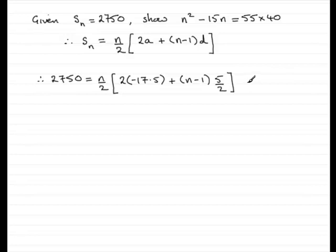Right, so we've got that. There are many things we could do to simplify this. Let's just work on the inside of the bracket, and also at the same time I'm going to multiply both sides by 2. So if I times both sides by 2, I'm going to double this value 2750, giving me 5500. And that means this side is just going to be n. Let's clean up what we've got in the bracket. We're going to have 2 lots of minus 17.5, so that's minus 35. Let's expand this bracket at the same time, so we're going to have plus 5n over 2 and then minus 5 over 2.